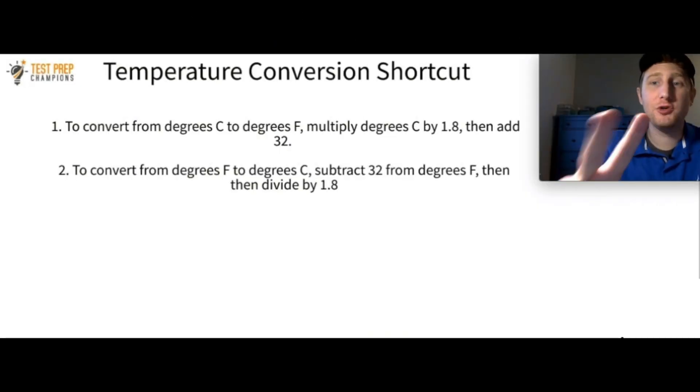How would you like to have two shortcuts for getting temperature questions right faster? Well that's what I'm going to give you here. So the first one would be if you have to convert from degrees Celsius to degrees Fahrenheit, all you have to do is take the temperature in degrees Celsius and multiply that by 1.8 then add 32 and you've got your answer. Now to go the other way, to go from Fahrenheit to Celsius, you just subtract 32 from degrees Fahrenheit, then divide by 1.8.